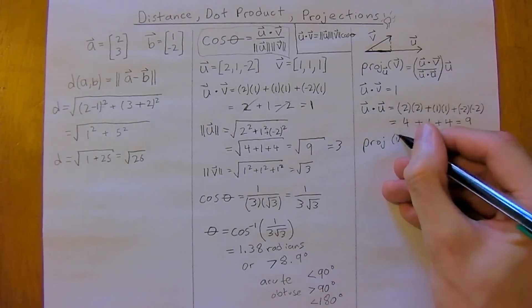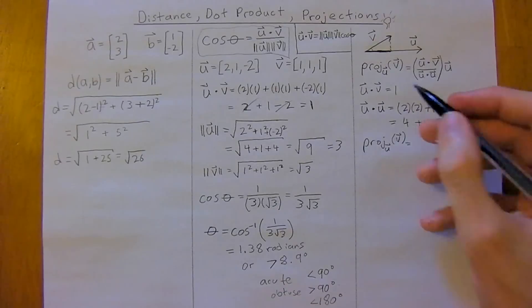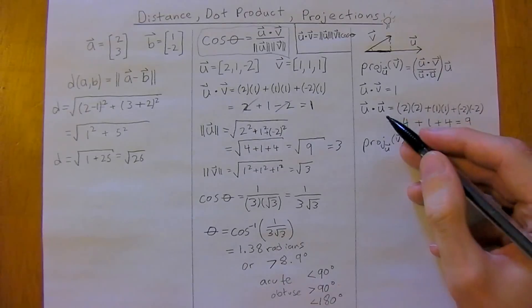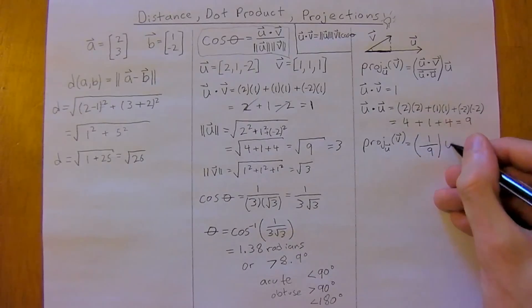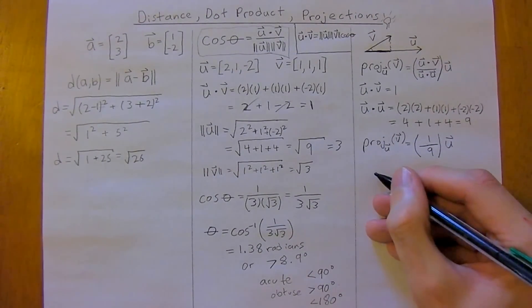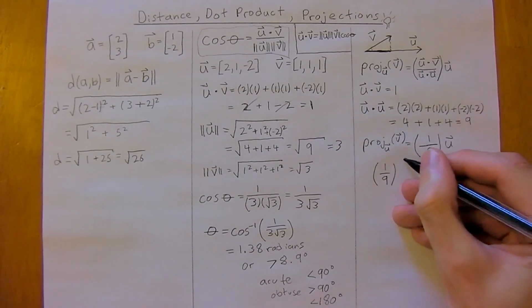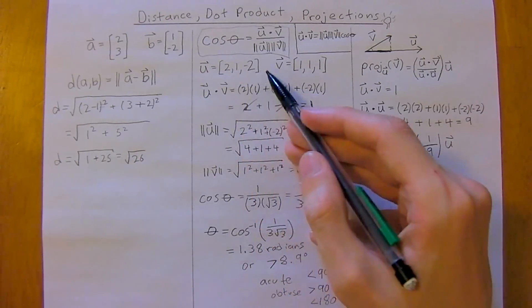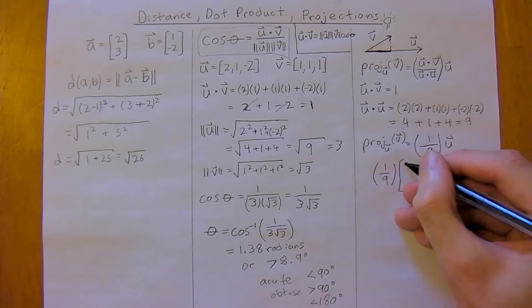so now we can rewrite this equation, so projection of V onto U equals, well, the top part is one, and the bottom part we just worked out is nine times vector U, so we've got now just the scalar multiplied by a vector, here, so all I've done is I've taken, I've taken the row form of vector U, and just to make it a little easier, convert it into the column form,